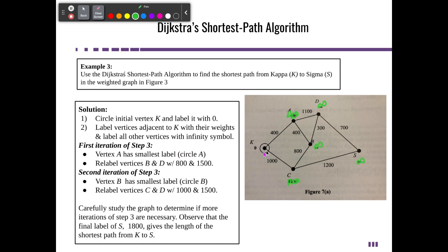Vertex A has the smallest, so we will circle A. And relabel vertices B and D with 800 and 1500. We got four and four and that gives me 800, and then we'll replace that with 1500 right there and 800 right there. So we've got this path so far.